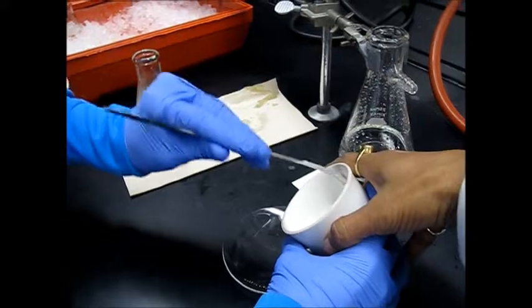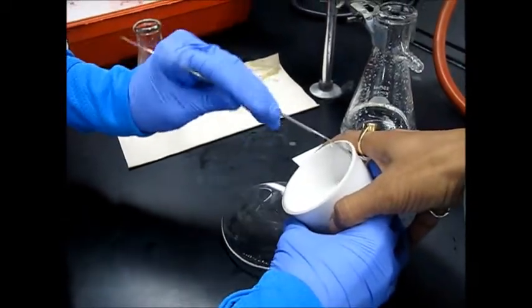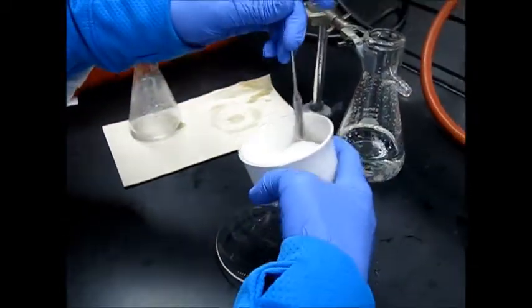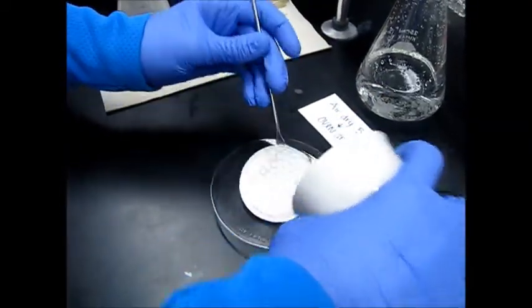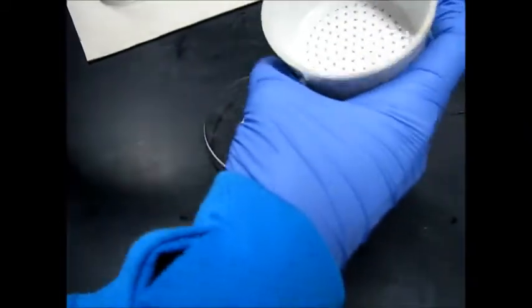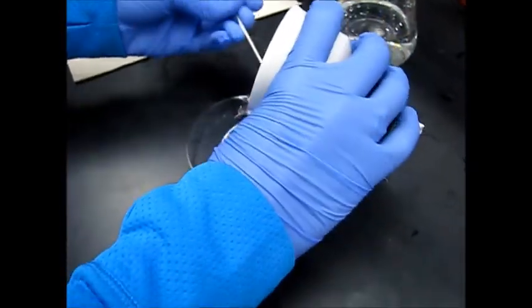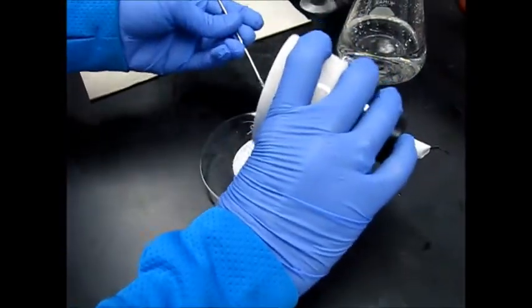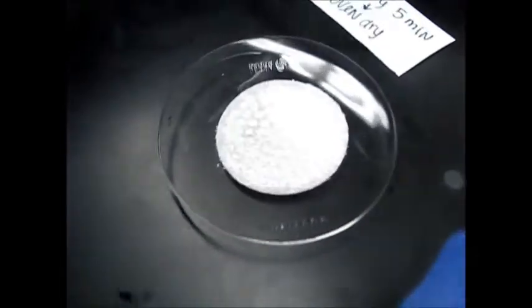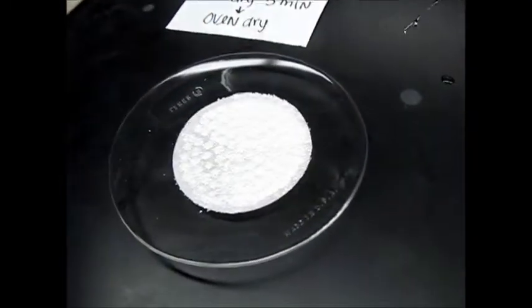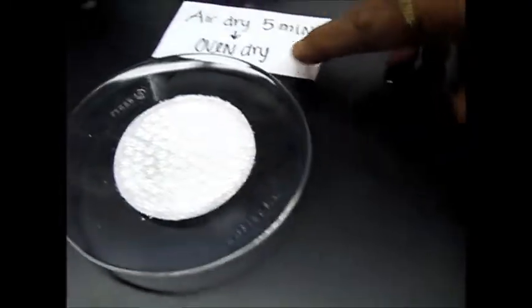Now we will use the spatula to scrape the sides of the funnel. We can remove this and then with the filter paper, everything. Very cool. And then we have to clean this Buchner funnel for second time use. So this is for benzoic acid.